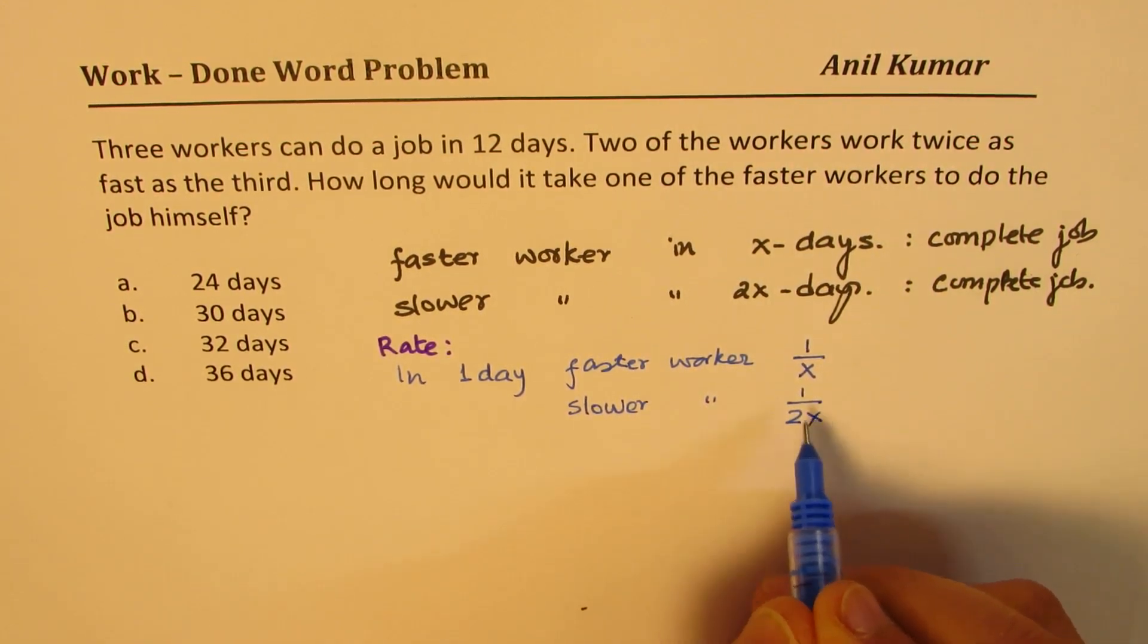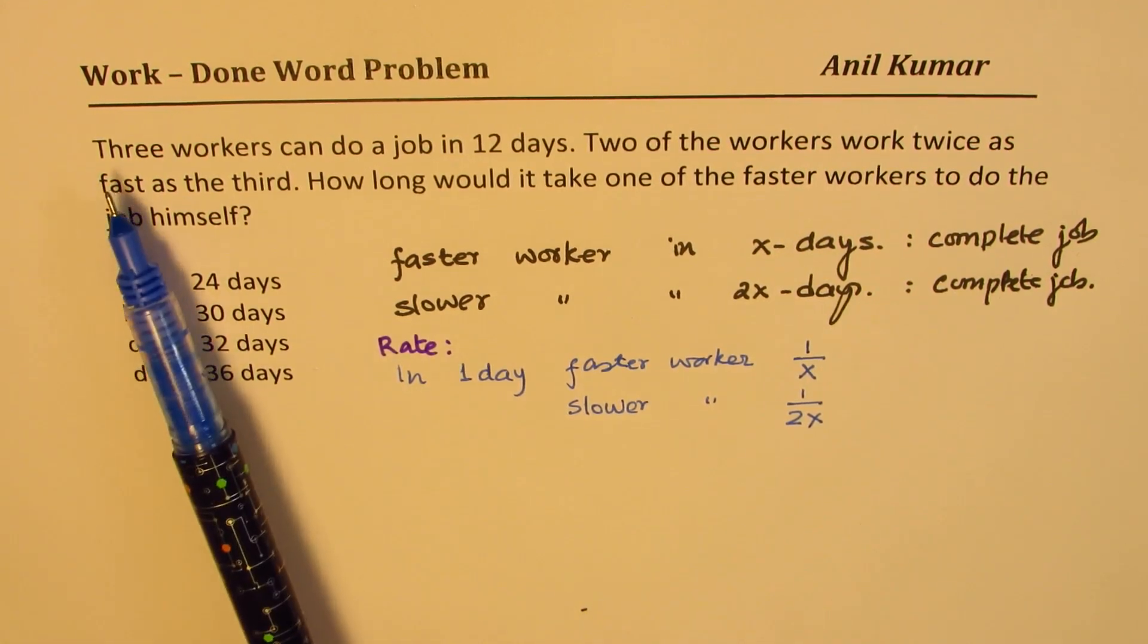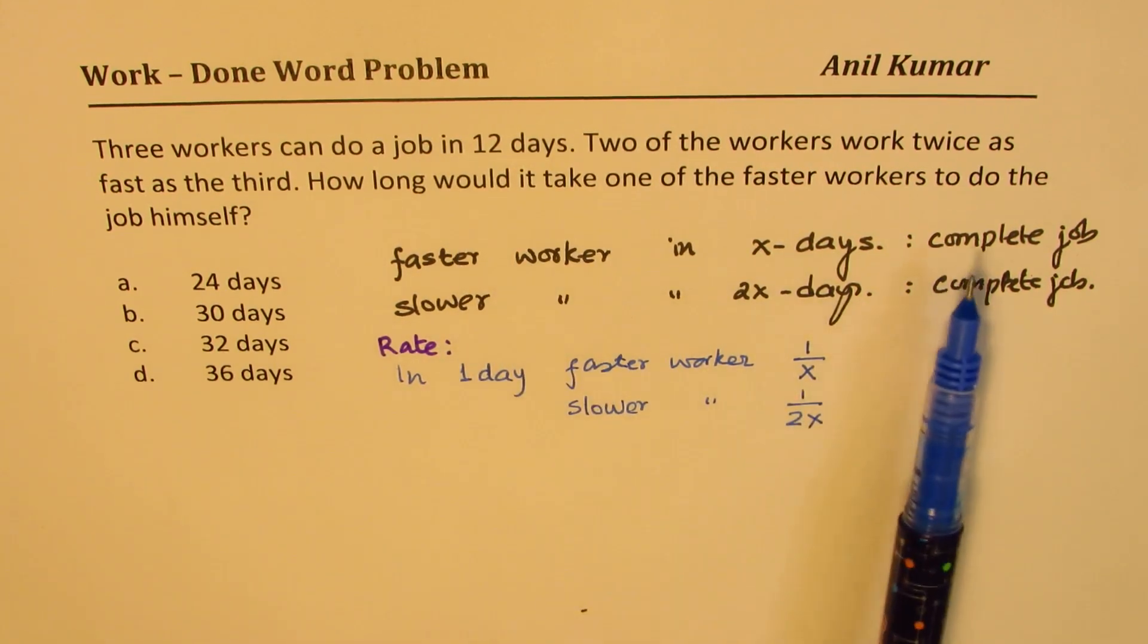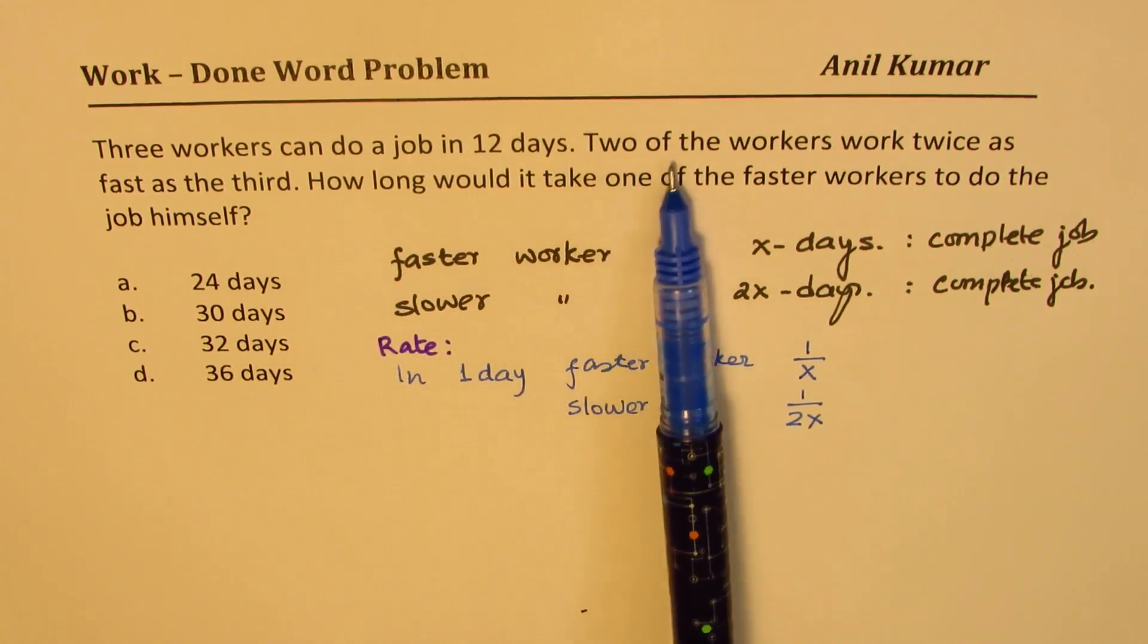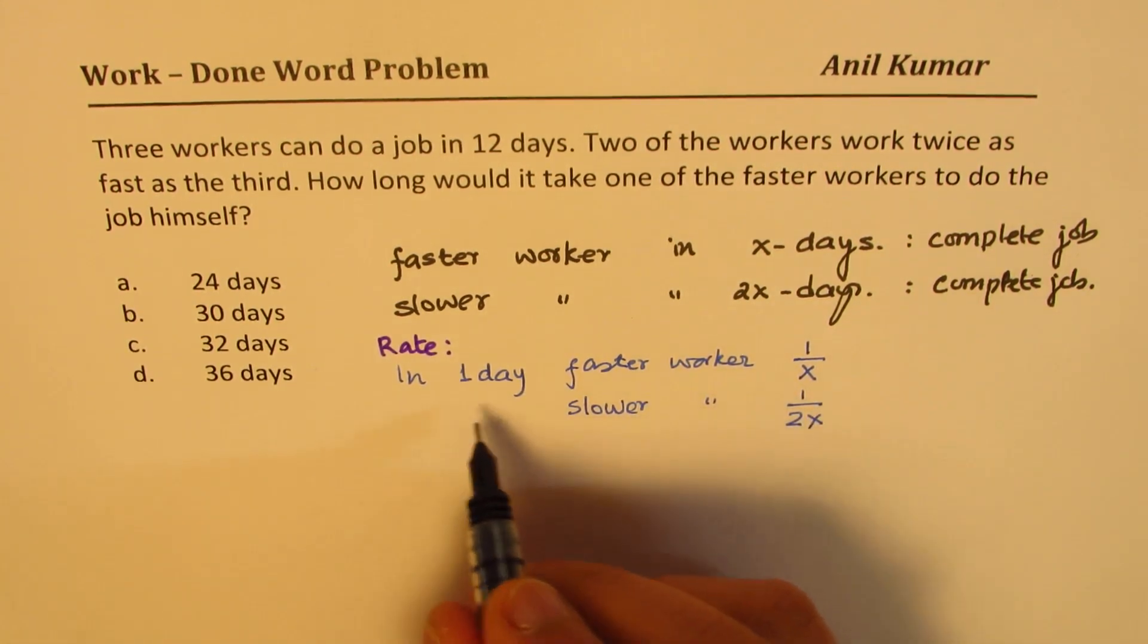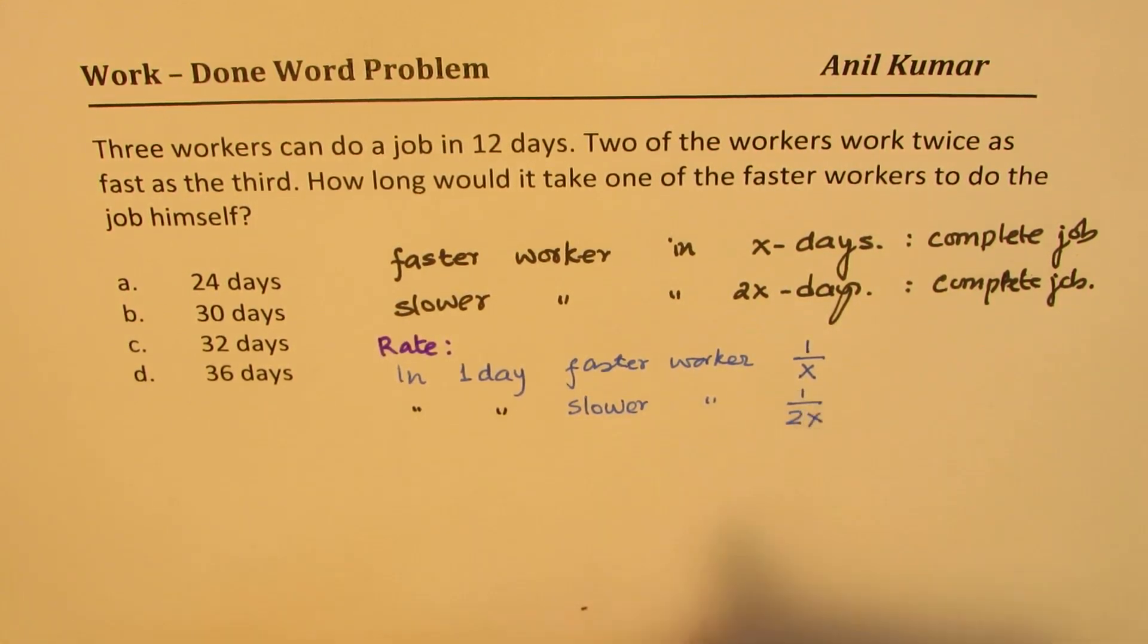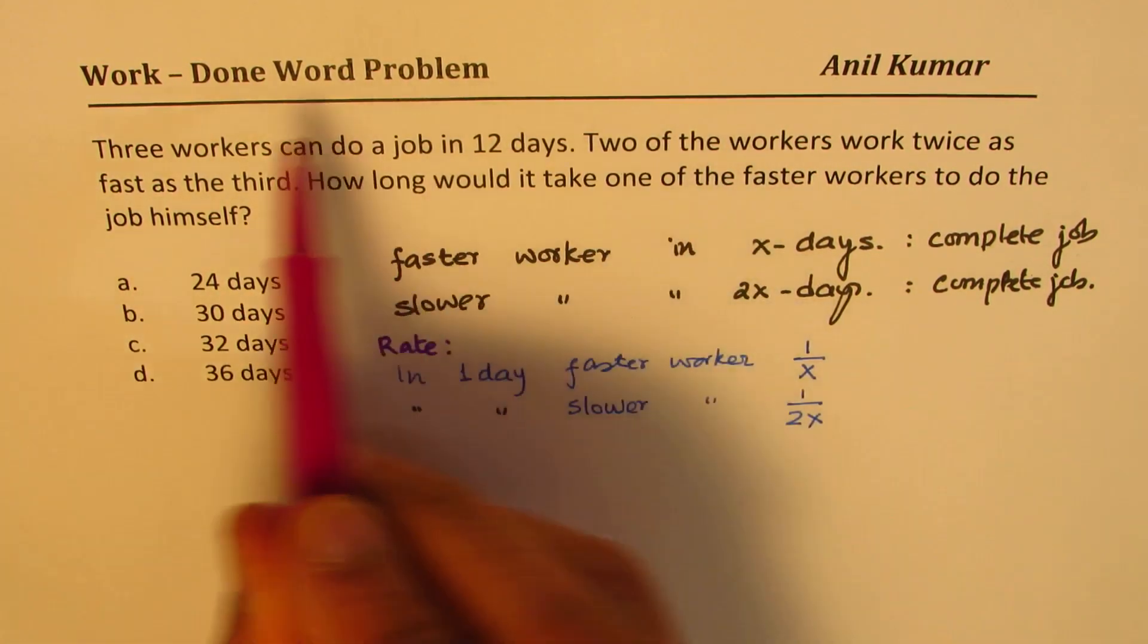Now the question says three workers can do a job in 12 days. So this particular job to be completed, three workers, out of which two workers work twice as fast as the third. So we have two fast workers. These are one day for faster worker, one day for slower worker, this much.